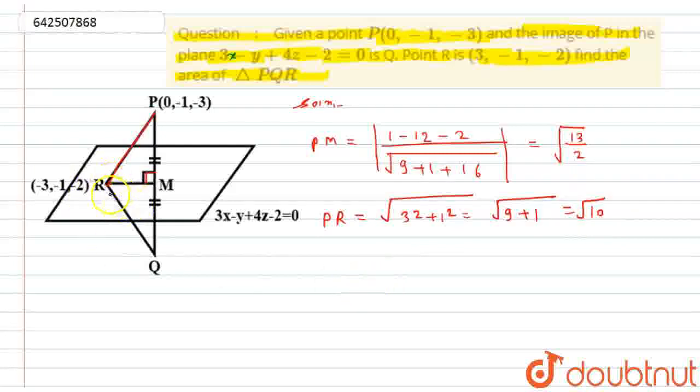Now, what I need here, that is RM. So by using the same, in right angle triangle, by Pythagorean theorem, I can find here the length of RM will be equal to under root of this 10 minus this 13/2, which will be equal to under root of 7/2.